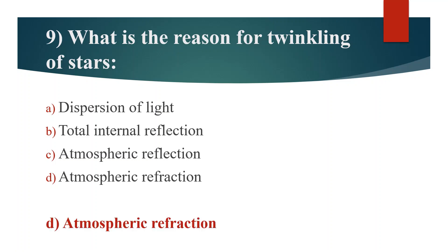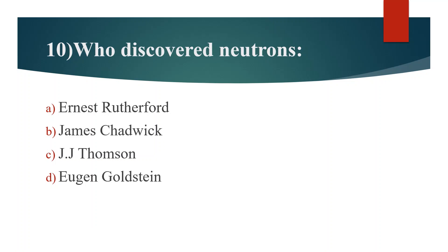Question 10. Who discovered neutrons? Option A: Ernest Rutherford. Option B: James Chadwick. Option C: J.J. Thompson. Option D: Eugen Goldstein. Answer is Option B: James Chadwick.